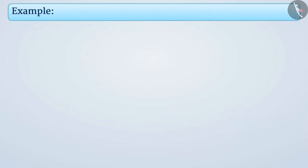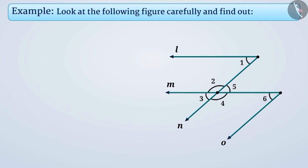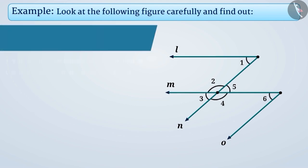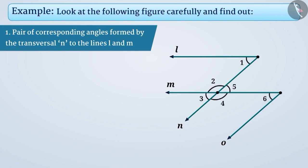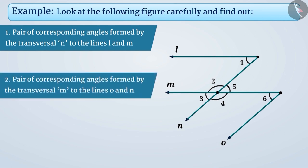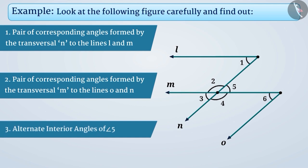Next example. Look at the following figure carefully and find out. As you can see, the angles formed by the transversal N to the lines L and M are angle 1, angle 2, angle 3, angle 4, and angle 5.